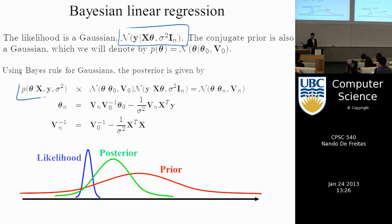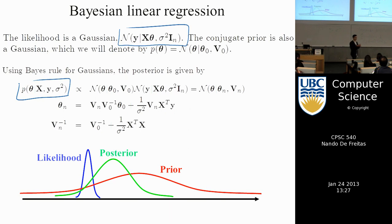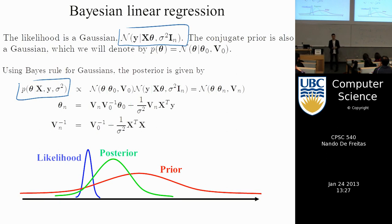The Bayesian framework subsumes maximum likelihood and ridge regression — it's more general. Instead of computing a single theta, we compute a posterior distribution over thetas. If you choose θ₀ = 0 and V₀ diagonal, you recover ridge regression; the posterior mean is just the ridge regression estimate. The game is to compute the posterior distribution P(θ|y,X,σ²), which has both a mean and a variance acknowledging uncertainty in theta.